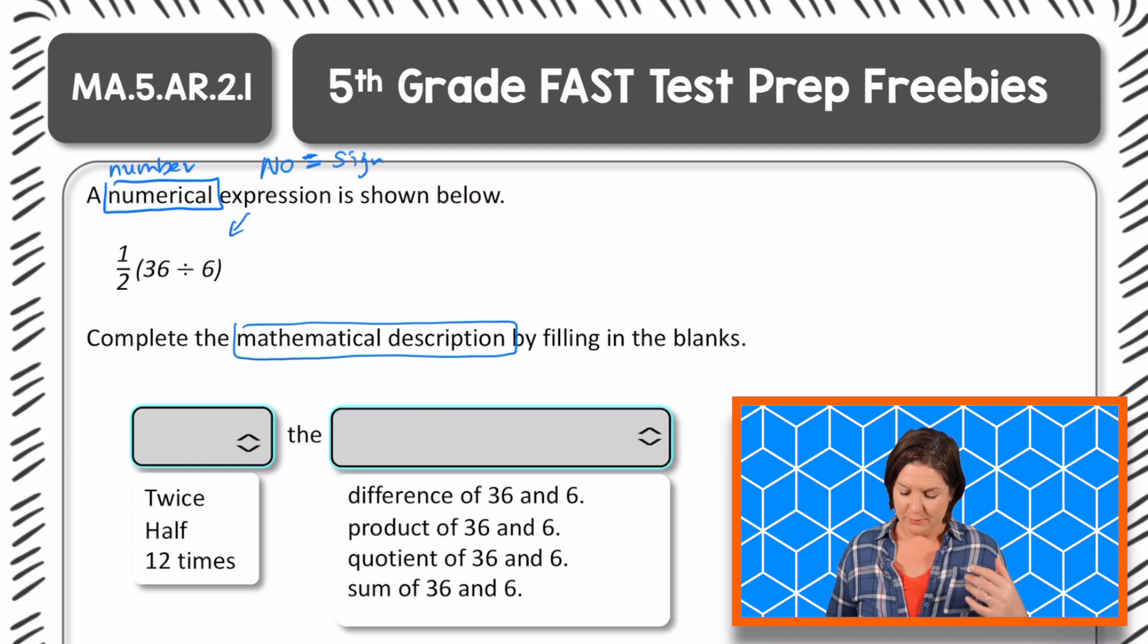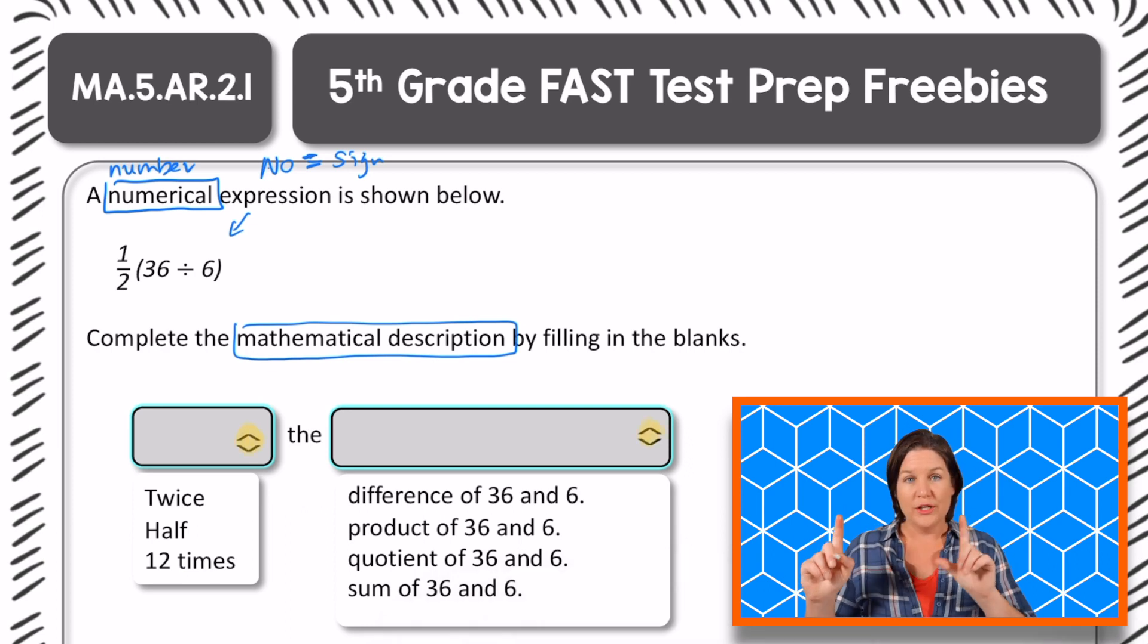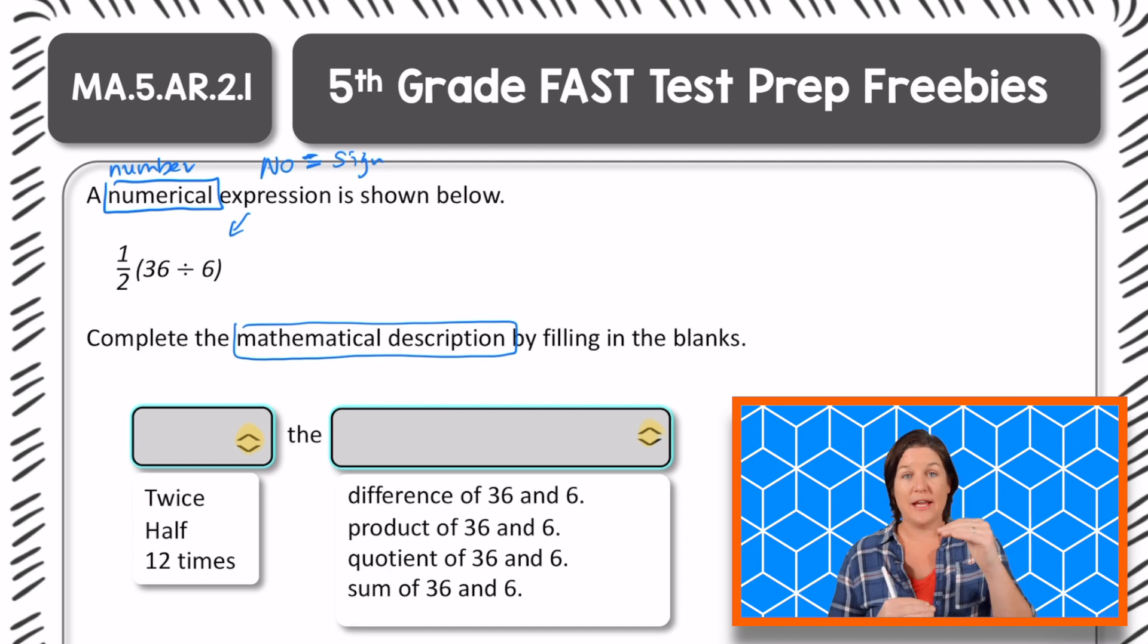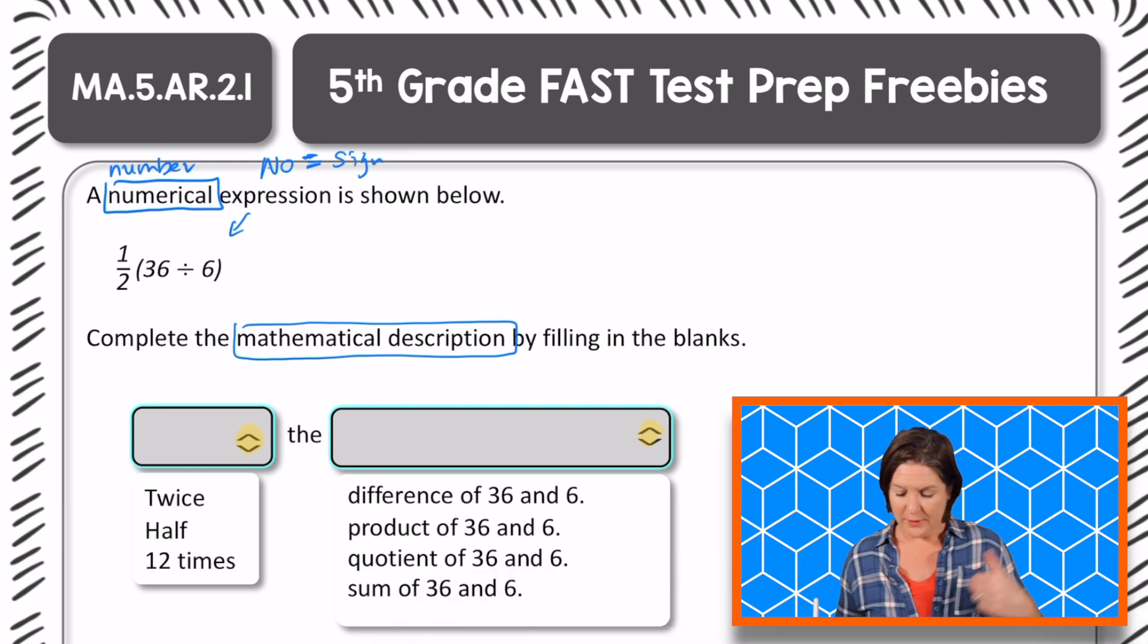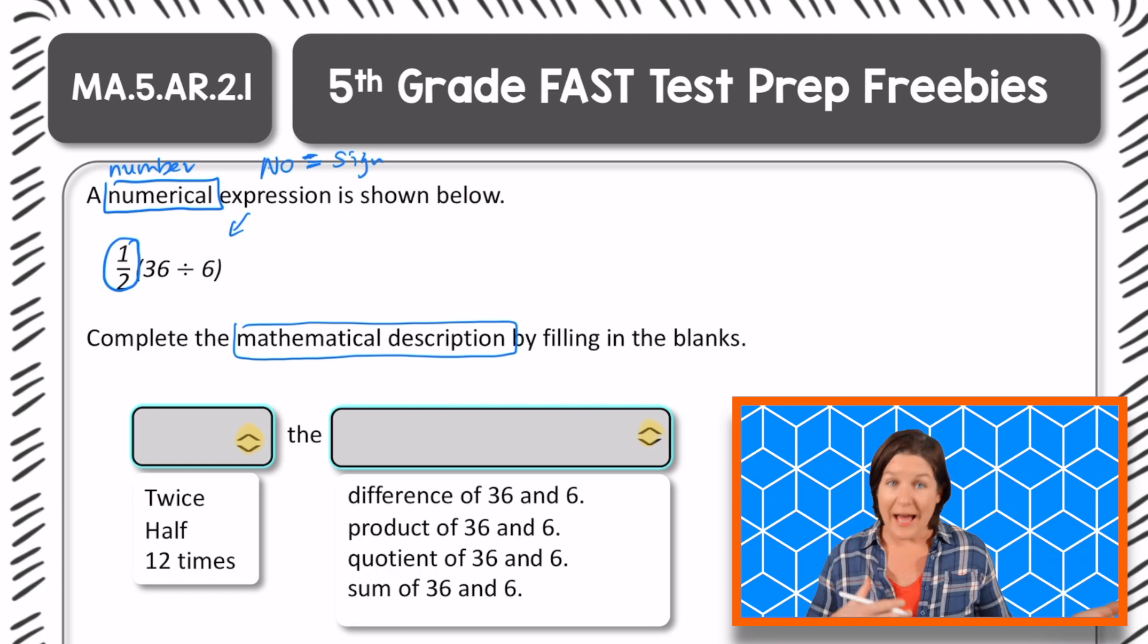So it says blank, the blank, and I see little arrows right here. So on a computer-based test, I would click these two arrows and that would drop down the answer choices and I would select the answer choice that makes sense. So for this one, would it be twice the blank, half the blank, or 12 times the blank? I think they're talking about this piece right there, and that is the fraction that we would read as one half.